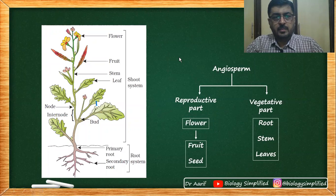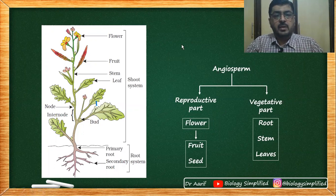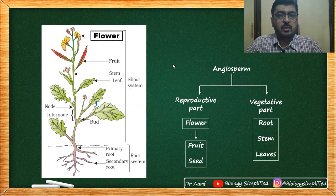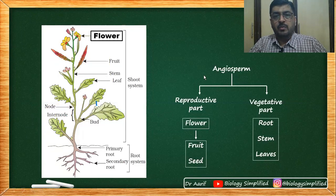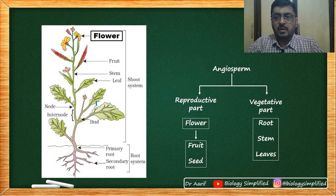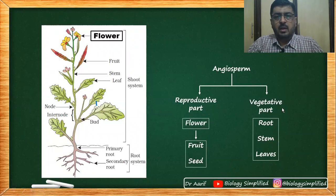Hi everybody, hope everybody is doing well. We are back with the fourth session on morphology. In the previous three weeks we have done root, stem, and leaf, and today we intend to do flower. We will divide the session into three parts: the first part discusses the various characteristics of flower and different types; the second part covers the non-essential whorls — calyx and corolla; and the third part covers the essential whorls — androecium and gynoecium.